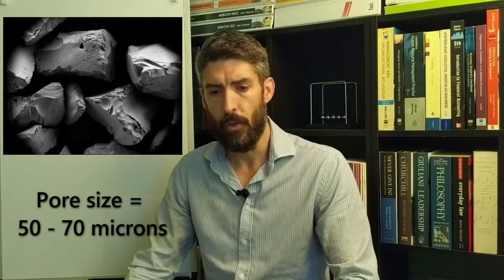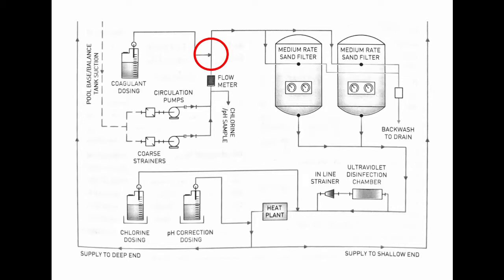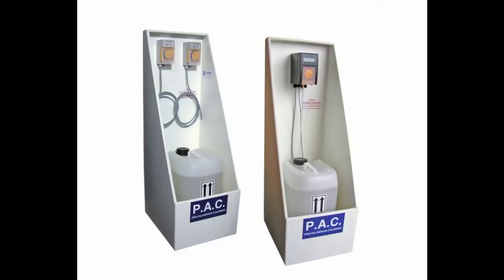Coagulants are substances that get added to the pool circulation system. The best way is to inject them continuously at a very low dose rate directly into the circulation system at some point prior to filtration but after the circulation pumps. One of the most commonly used chemicals is called polyaluminium chloride, or PAC for short.